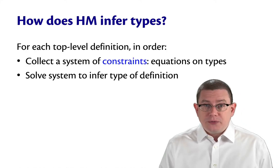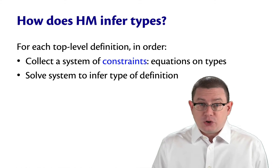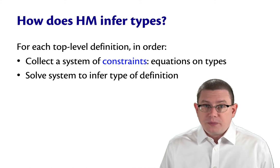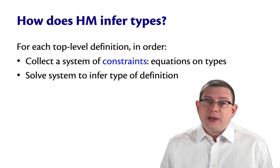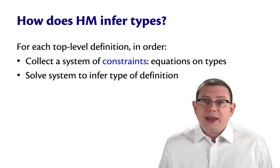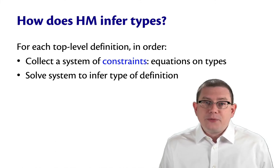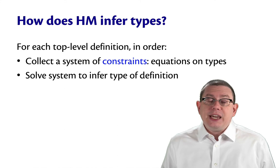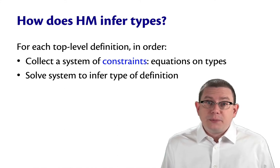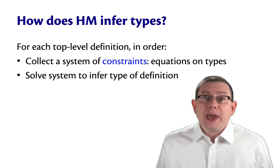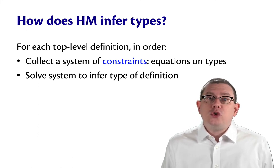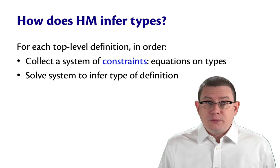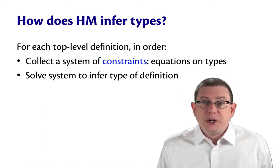So how does Hindley Milner infer types? Here's the big picture view of it. It processes each top-level definition in order. So if you're working in utop, think of that as meaning each phrase that you type in and end with a double semicolon gets fully type inferred before moving on to the next one. If you're working in a .ml file, it means each definition, each let definition in that file, in particular, gets processed in order. So that's one of the main reasons that OCaml doesn't let you use later definitions inside of earlier ones unless, of course, you make them mutually recursive, which then means they'll both be type inferred at the same time.